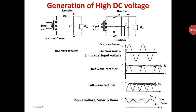The input is an AC wave. In a sinusoidal waveform, in one cycle there is one positive half cycle and one negative half cycle. During the positive half cycle the diode becomes forward biased and we get the output voltage.